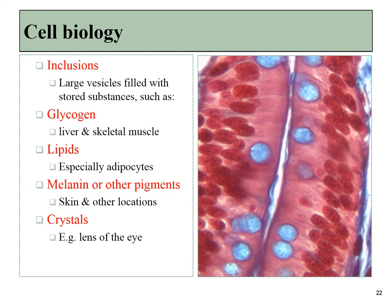Found within the cytoplasm might be a number of inclusions — structures visible under the microscope that aren't just basic cytoplasm. This may include deposits of glycogen within muscle cells, lipids especially found within adipocytes, melanin found in inclusions within the skin, and crystallized proteins found within the lens.